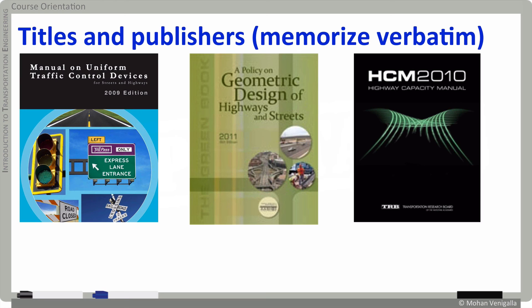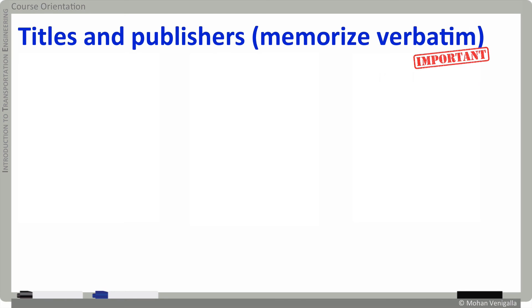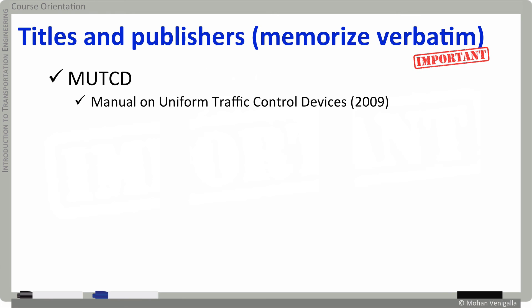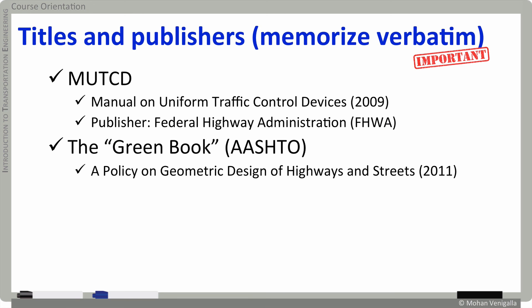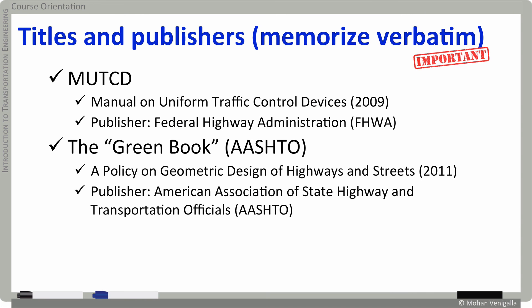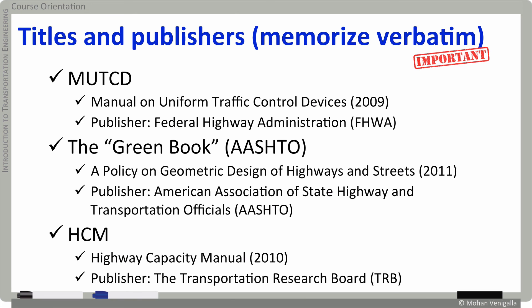These three codes of practice are referred to by practitioners as MUTCD, The Green Book, and HCM. It is important for you to remember the actual titles and publishers. MUTCD stands for Manual on Uniform Traffic Control Devices, 2009 edition, published by the Federal Highway Administration. The Green Book is A Policy on Geometric Design of Highways and Streets, 2011 edition, published by AASHTO — American Association of State Highway and Transportation Officials. HCM is the Highway Capacity Manual, published by the Transportation Research Board in 2010.